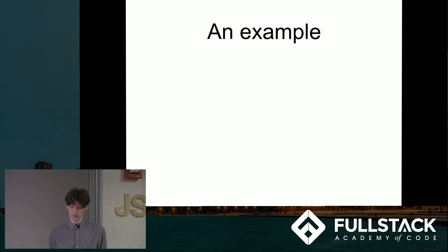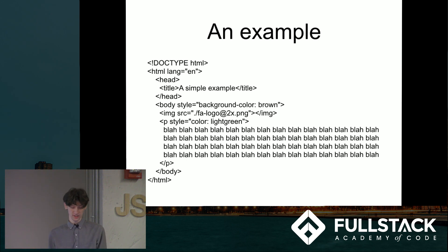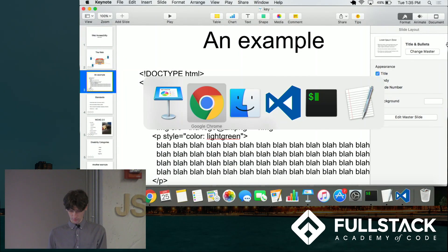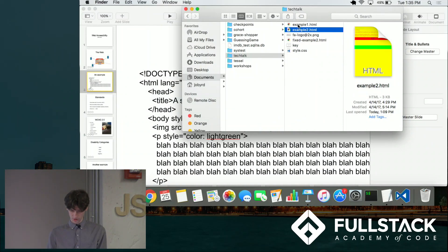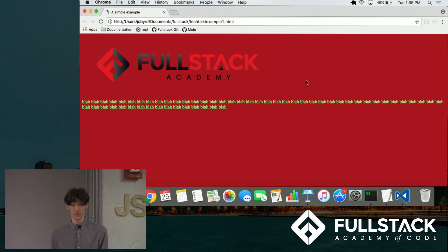Here's an example. This code more or less looks fine — it's not great code, it's kind of a crappy website probably, but nonetheless it works. However, there are some problems that are not immediately apparent from just looking at the code. I'm gonna open up the web page and we'll see the problem. Not only is this ugly, there's also the fact that if you have red-green color blindness, you're probably gonna have a lot of trouble reading any of the actual text because it's green on red.